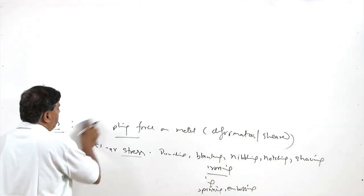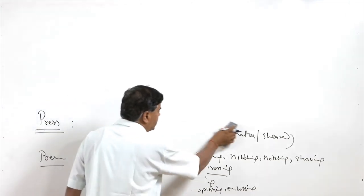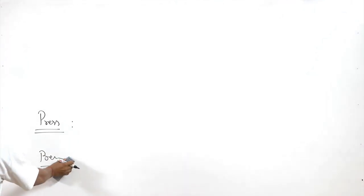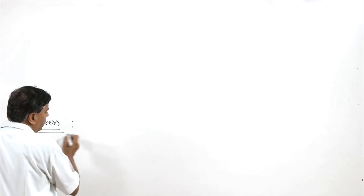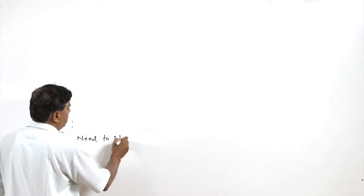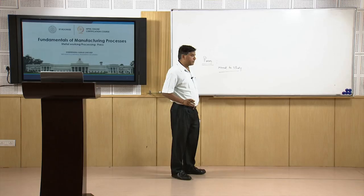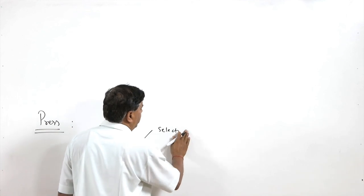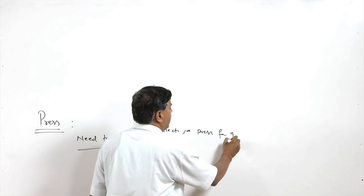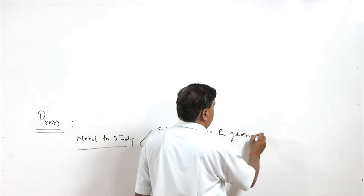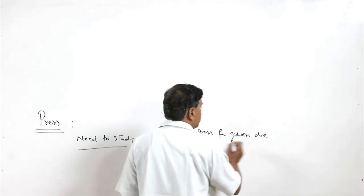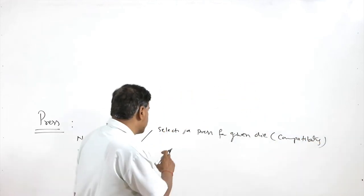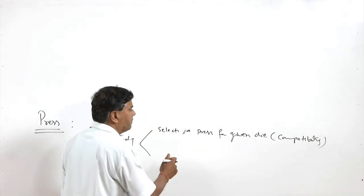For applying suitable force during sheet metal operations, a suitable press needs to be selected. Understanding presses helps in two ways: it helps to select a press for a given die used in sheet metal operations, and it looks after the compatibility aspect of the die with the press. This is the case when we have a number of presses and one is to be chosen.